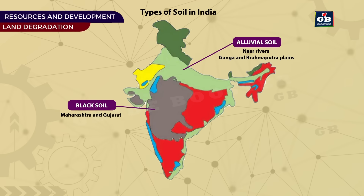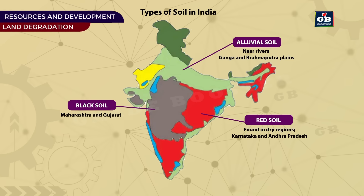Black soil is best for growing cotton, and it is found in Maharashtra and Gujarat. Red soil is found in dry regions and needs more fertilizers — for example, the soils of Karnataka and Andhra Pradesh.